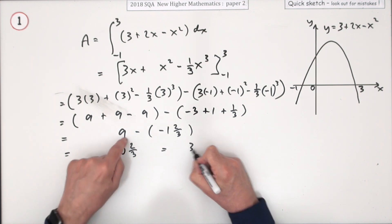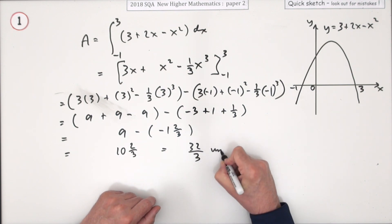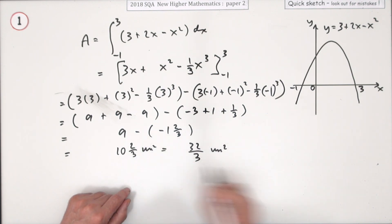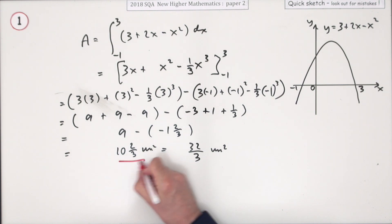Or you could say 32 upon 3 units, whichever. Either would do.